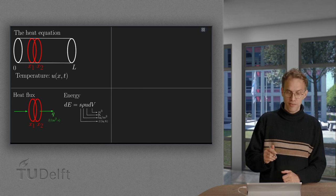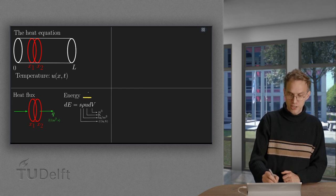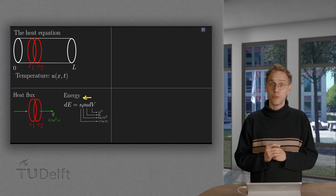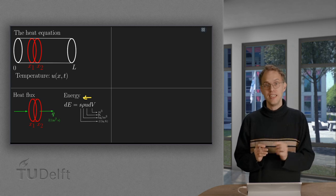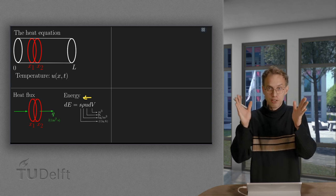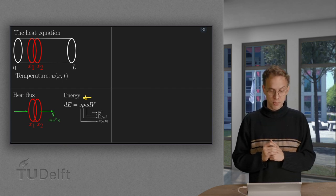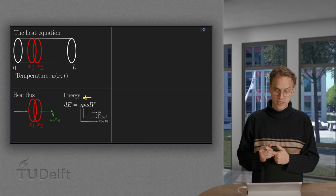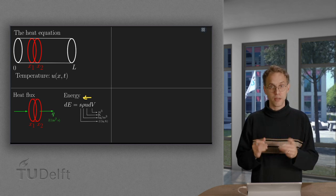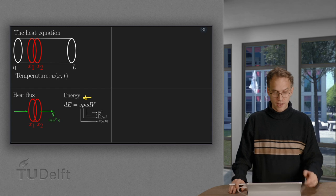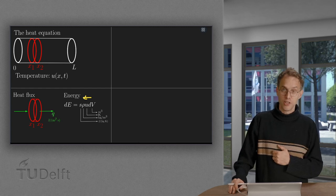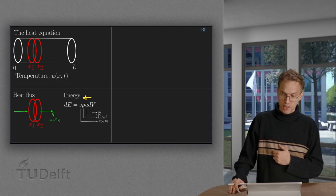So, what do we have? What is the energy in this small segment between X1 and X2? Well, the dE, because we consider X1 and X2 to be very close together, is S, the specific heat, times rho, the density, times U, the temperature, times dV, its volume.